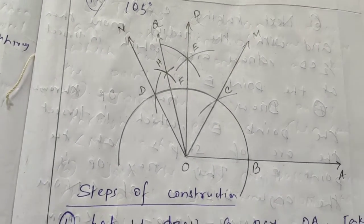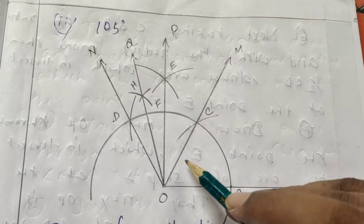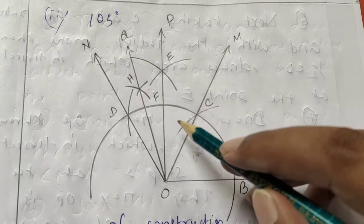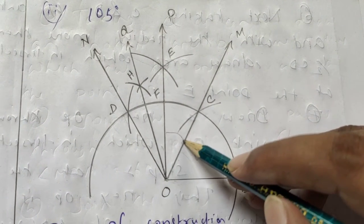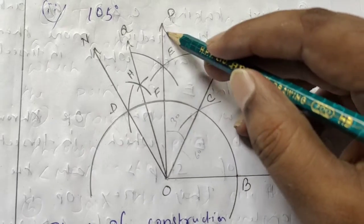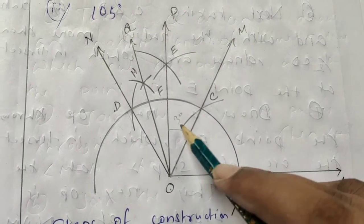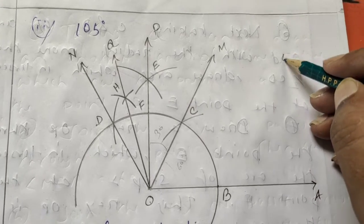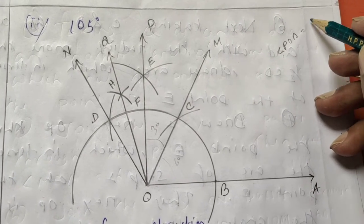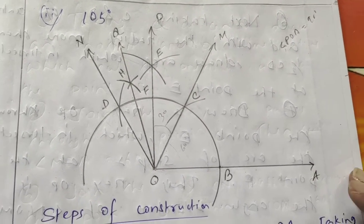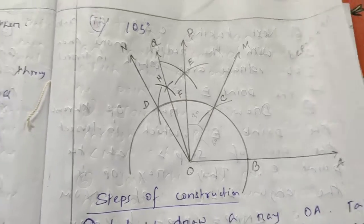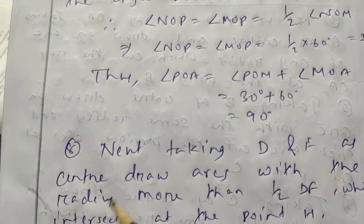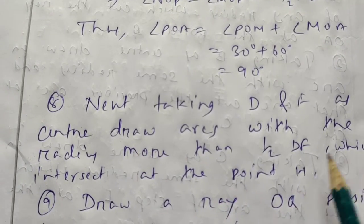Since angle MOA is 60 degrees and we now find angle POM is 30 degrees, that means angle POA equals 30 degrees plus 60 degrees, which equals 90 degrees.